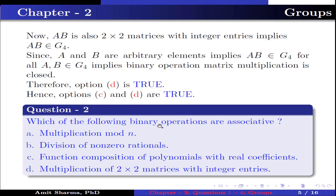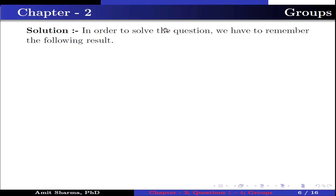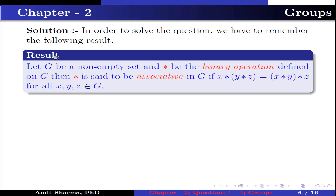Question number 2: Which of the following binary operations are associative? Option A: multiplication mod n. Option B: division of non-zero rationals. Option C: function composition of polynomials with real coefficients. Option D: multiplication of 2×2 matrices with integer entries. In order to solve the question, we have to remember the following result: let G be a non-empty set and star be the binary operation defined on G. Then star is said to be associative in G if (x★y)★z = x★(y★z) for all x, y, z belonging to G.